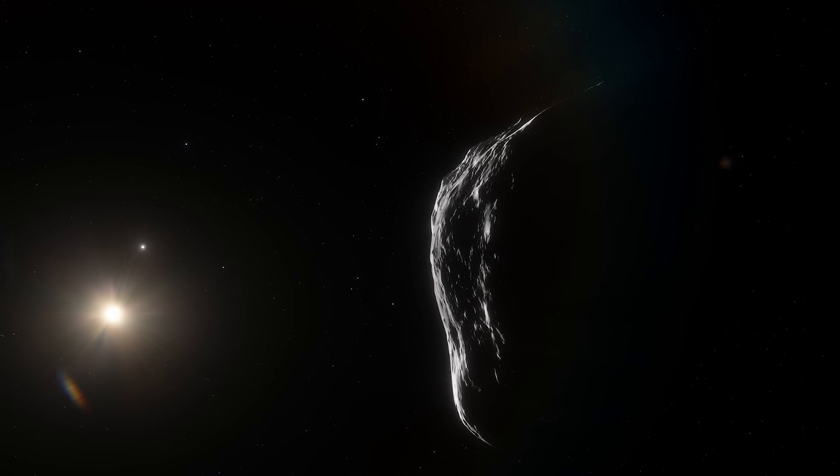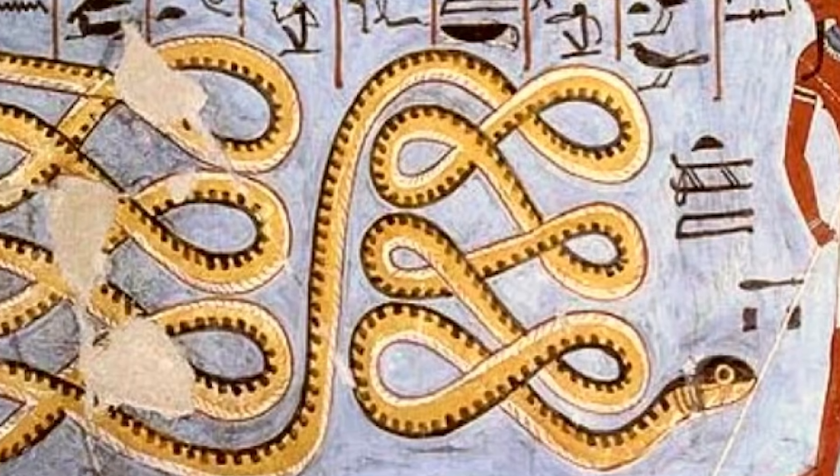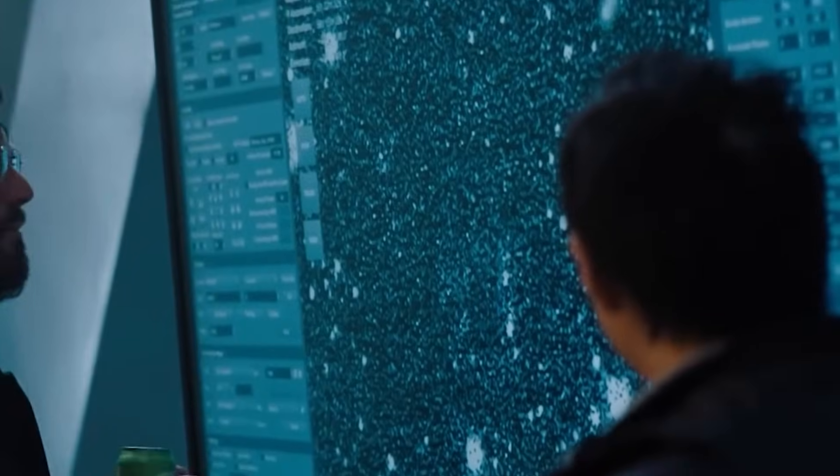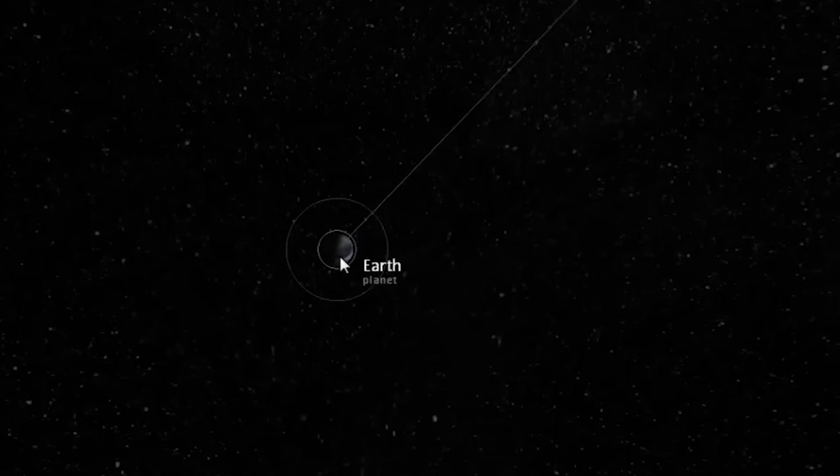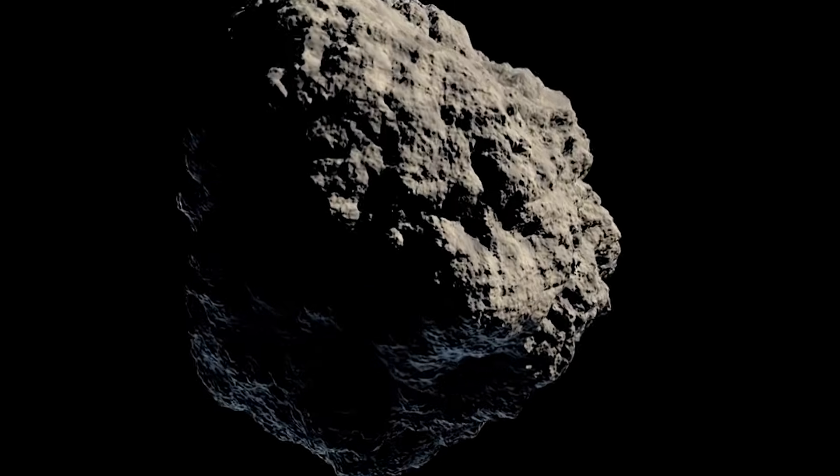This is Apophis, an asteroid named after an Egyptian deity of chaos. Curious, isn't it? A fitting name because its existence is bizarre. Identified in 2004, this space rock quickly attracted the attention of scientists around the world. And why? Because it approaches us in 2029.